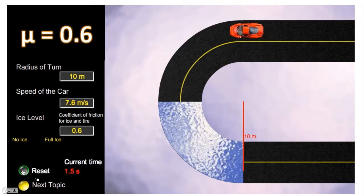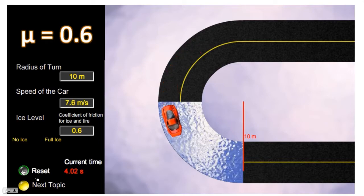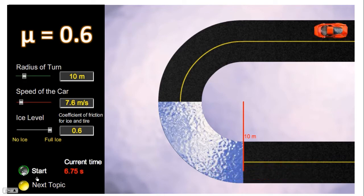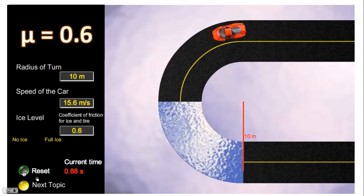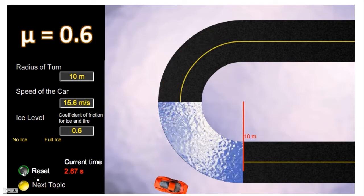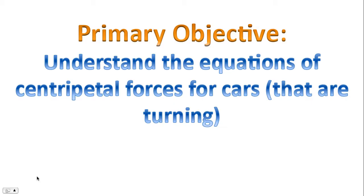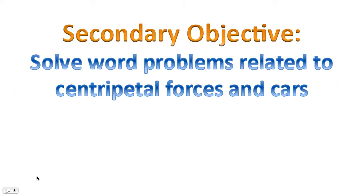Good morning! Today we're going to investigate the motion of a car as it hits the ice. Notice that at a speed of 7.6 meters per second, the car can negotiate the turn safely. Now let's increase the speed to 15.6 meters per second — notice the car spins out. Our primary objective is to understand the equations of centripetal forces for cars when turning, and our secondary objective is to solve word problems related to centripetal forces and cars.